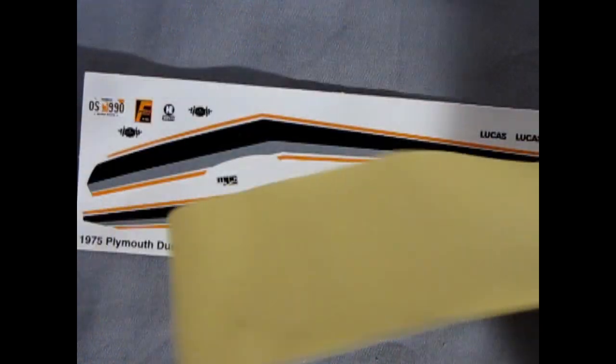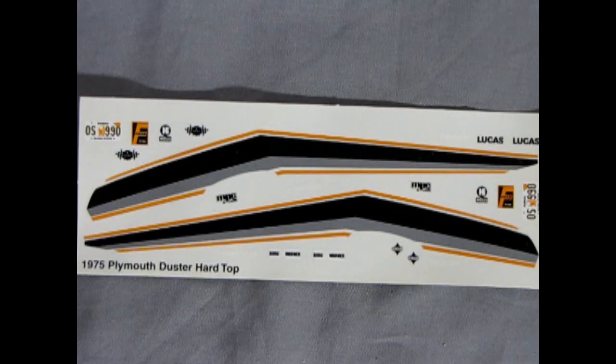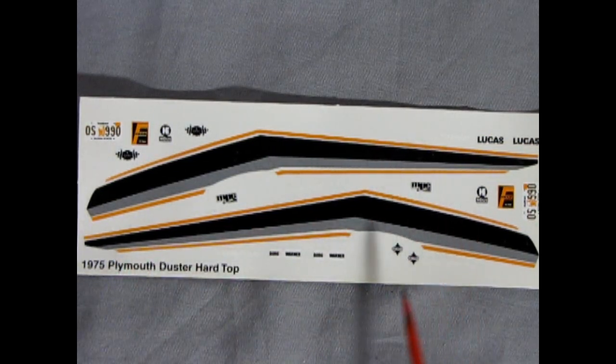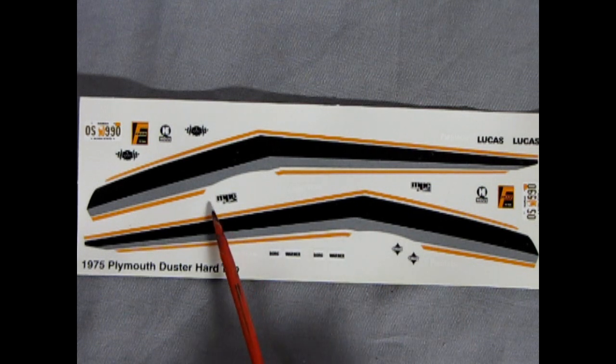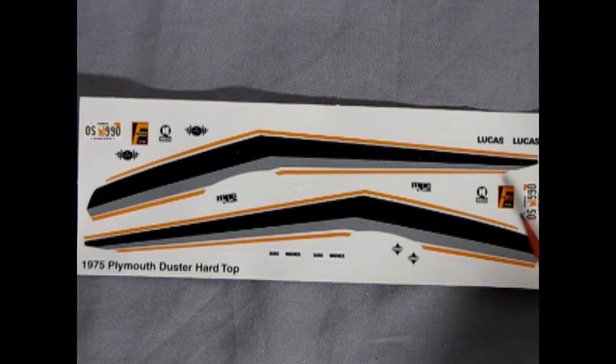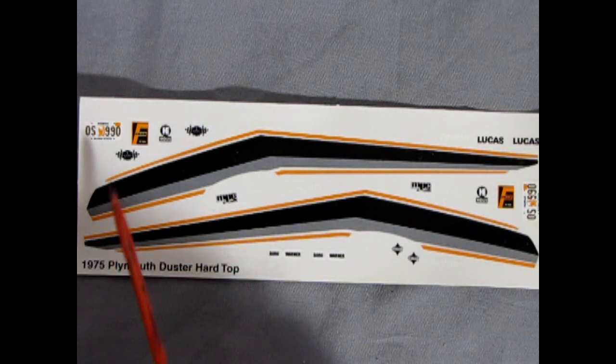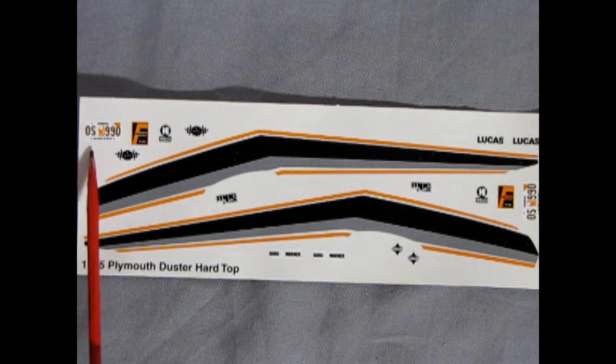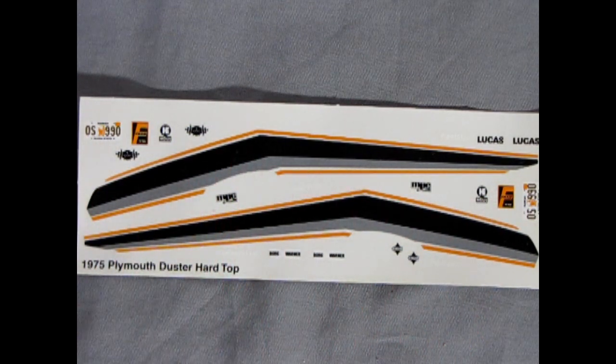Last but not least we have our decal sheet and here's the big reveal. You can see we have these nice orange, black and gray stripes. This is what the kit would have come out with in its initial run. Aha! Here we have the MPC logo, so I was correct. We got the Fram decal as well as a Keystone decal. And here we have Hawaiian license plates which is quite interesting. You don't see too many from the Aloha State.